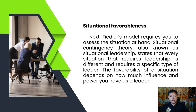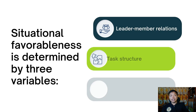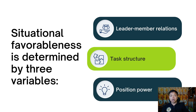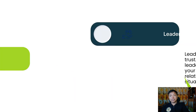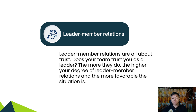Next is situational favorableness. Fiedler requires you to assess the situation at hand. Situational contingency theory, also known as situational leadership, states that every situation requiring leadership is different and requires a specific type of leader. The favorableness of a situation depends on how much influence and power you have as a leader. Situational favorableness has three variables: leader-member relations, task structure, and position power. Leader-member relations are all about trust — does your team trust you as a leader? The more they do, the higher your degree of leader-member relations and the more favorable the situation.